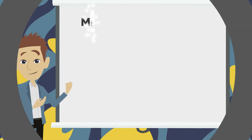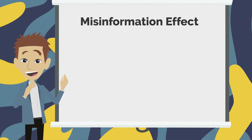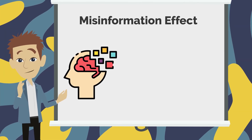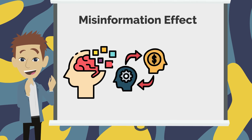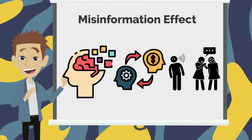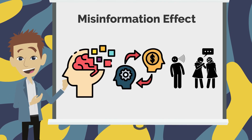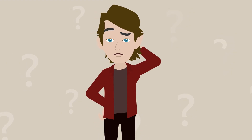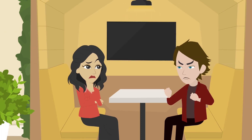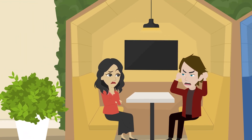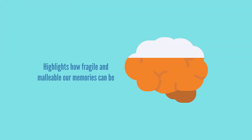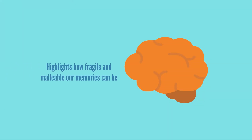The misinformation effect refers to the phenomenon where people's memories of events can be changed or distorted by incorrect information that they're exposed to after the event has occurred. The concept highlights how fragile and malleable our memories can be.